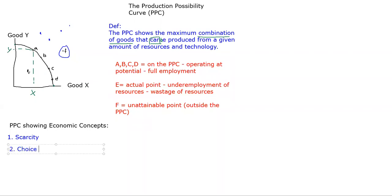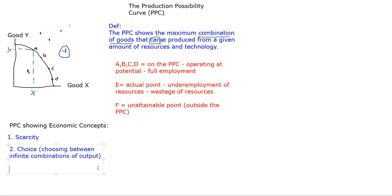The second concept we can show is choice - choosing between infinite combinations of output. Even if you're perfectly efficient and on the PPC, you still have to choose: should I produce at A, at B, which gives a different combination of Y and X, at C, at D? There are infinite points you could plot on that curve. You have to make a choice - this was also part of the basic economic problem. And obviously, if you're choosing, you also suffer from opportunity cost, which is a pretty major concept.